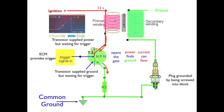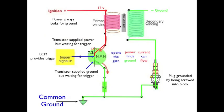Now to get this spark plug to fire we've got to get all this current that's building in the primary into the secondary because that's where it's going to find the ground and fire the spark plug. So this primary needs to stop building so that ECM will remove the trigger. When it removes the trigger the gate will close. Power can't find ground. Current can't flow.